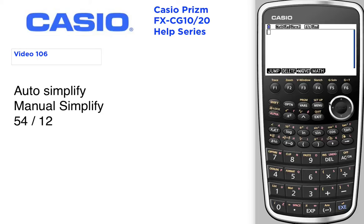Auto simplify versus manual simplify. In auto simplify, a problem like 54 over 12 will be reduced for you.